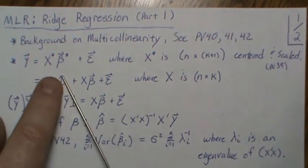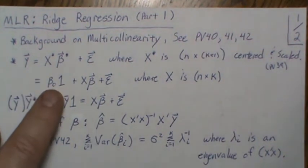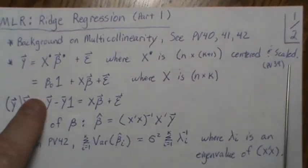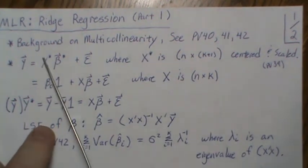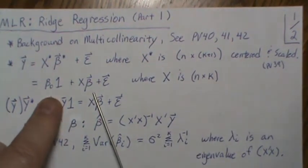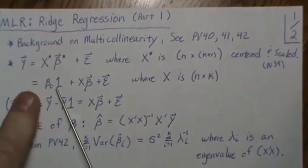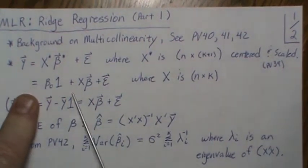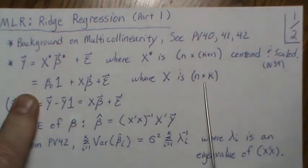Here's the setting: y equals X beta plus epsilon. I have stars here because we're going to change it and I don't want to carry the stars through the rest of the video. X-star is n by k+1 and we're going to center and scale it — I have a previous video (39) on centering and scaling. We take that first column of ones and separate it, and since the model is centered, the least squares estimate for beta-0 is y-bar. So we subtract y-bar and arrive at our new model where X is n by k.